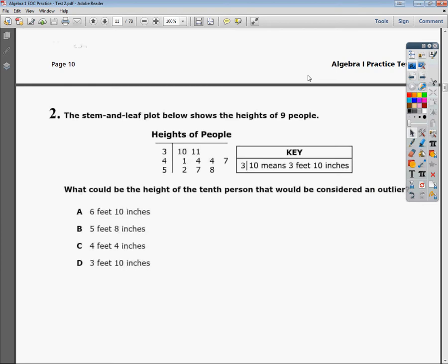The stem and leaf plot below shows the heights of 9 people. What could be the height of the 10th person that would be considered an outlier? Now you have to know what an outlier is, otherwise this question doesn't really make any sense.